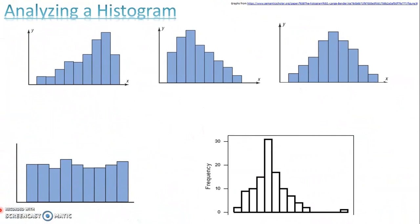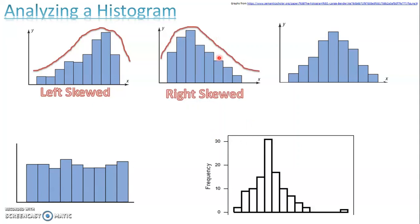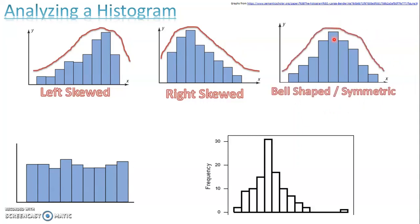Now let's look at analyzing key features of histograms. These are the same as when you looked at dot plots. Data can be skewed to the left, where most of the data is on the right side and the tail is on the left. Data can be right skewed, where most of the data is on the left and the tail extends to the right. Then we have bell-shaped or symmetric, where a line through the middle shows almost the same on both sides. We also have uniform, which is almost exactly the same throughout.